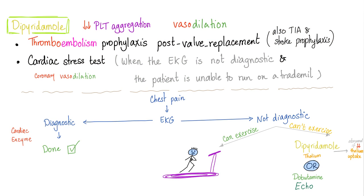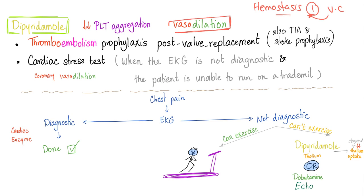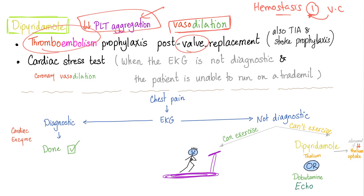Let's talk about dipyridamol. Its functions: it decreases platelet aggregation and causes vasodilation. So can we use it in thromboembolism prophylaxis? Yes — because it inhibits platelet aggregation and promotes vasodilation. Remember from hemostasis: step one was vasoconstriction. Vasoconstriction helps clotting; vasodilation decreases the chances of primary and secondary hemostasis, thereby preventing blood clots. Thromboembolism prophylaxis is needed after valve replacement — clots can gather on the new valve — so we use dipyridamol for prophylaxis.